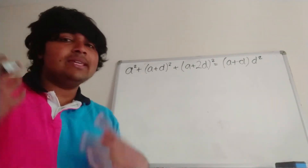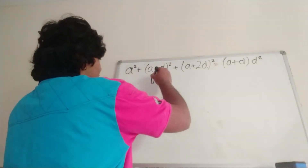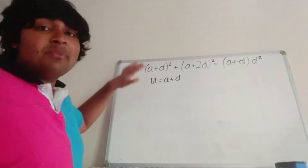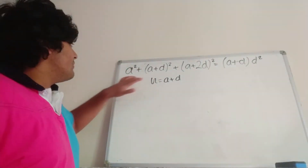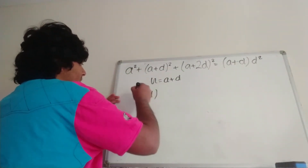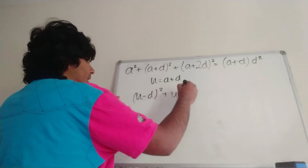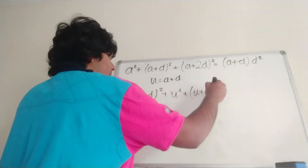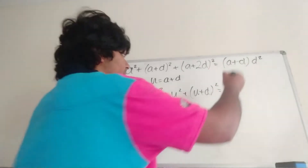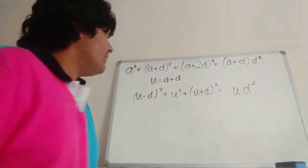I'm going to let u equal a plus d. So u equals a plus d, and I'm just plugging that back into the original equation. We get (u minus d) squared plus u squared plus (u plus d) squared is equal to u times d squared.